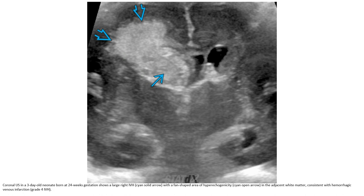This is the ultrasound in a three-day-old neonate born at 24-week gestation, showing a large right intraventricular hemorrhage with a fan-shaped area of hyperechogenicity in the adjacent white matter, consistent with hemorrhagic venous infarction.